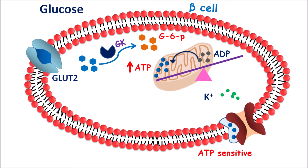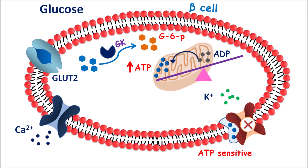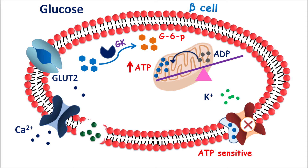ATP binding blocks the potassium channels so that potassium cannot go outside. This results in the opening of voltage-gated calcium channels, and calcium can enter into the beta cells resulting in depolarization. This depolarization results in the release of insulin from the beta cells.